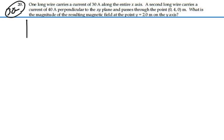What is the magnitude of the resulting magnetic field at the point y equals 2 on the y-axis? Alright, so let's see what's going on here. We have one wire that's going in the positive x-direction. Let's call that I1 with a current of 30 amps.